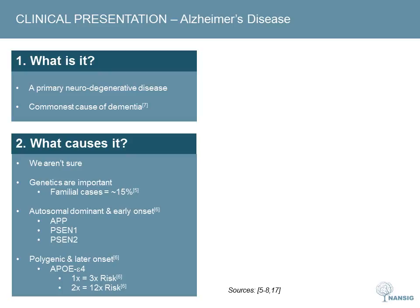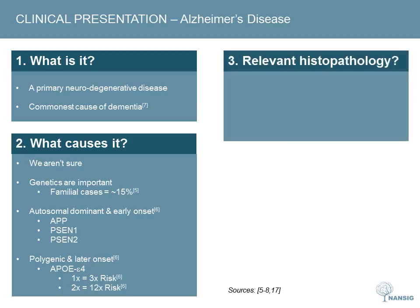A few types of dementia have histopathological findings which come up on medical school examinations. Two findings in Alzheimer's disease are neurofibrillary tangles and beta amyloid plaques. Neurofibrillary tangles are intracellular accumulations of abnormally folded tau proteins, which contribute to the function of microtubules under normal circumstances. Beta amyloid plaques are also collections of misfolded proteins, but these develop outside cells.